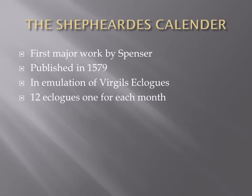The first famous work by Edmund Spenser is The Shepherd's Calendar. It was published in 1579 and was written in emulation of Virgil's Eclogues. There are 12 eclogues in the calendar — one eclogue for each month.